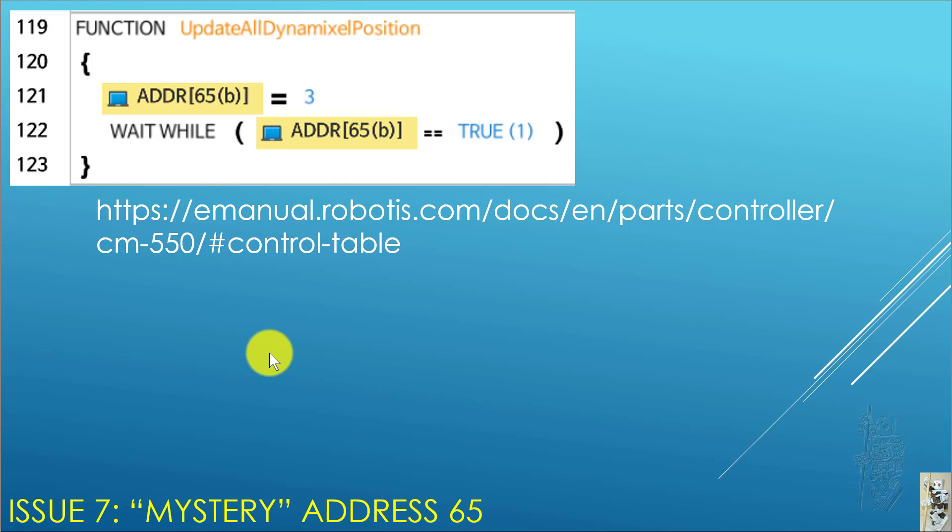Last issue, the main issue, there's a mystery address 65. If you look in the task program, in the function update all Dynamixels, which essentially just before it turned up, if the torque was off and just before it turned the power on again to all Dynamixels, it invoked this function. And essentially, this is a so-called custom write in Task. Essentially, it's write a number three and it's a byte into address 65. And then go to a wait while loop. As long as it reads that address again, as long as it says true, it stays here. So, wait until it's false and then it quits this function.